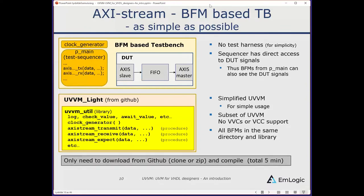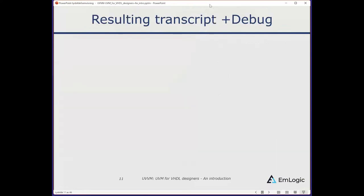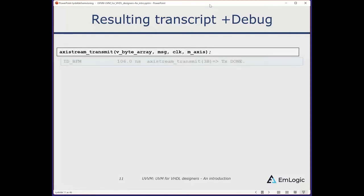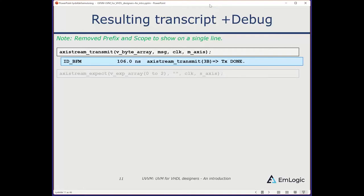To get started, just download from GitHub — clone or zip it — and compile. It takes about five minutes. Looking at the resulting transcript for AXI Stream: the command is AXI Stream Transmit. You provide a byte array and see the result in the transcript with prefix, timestamp, and message.